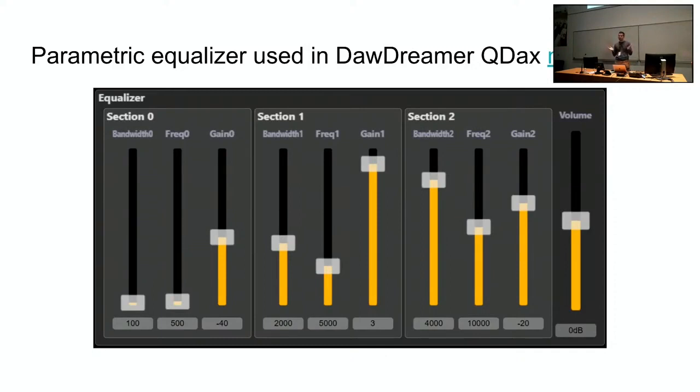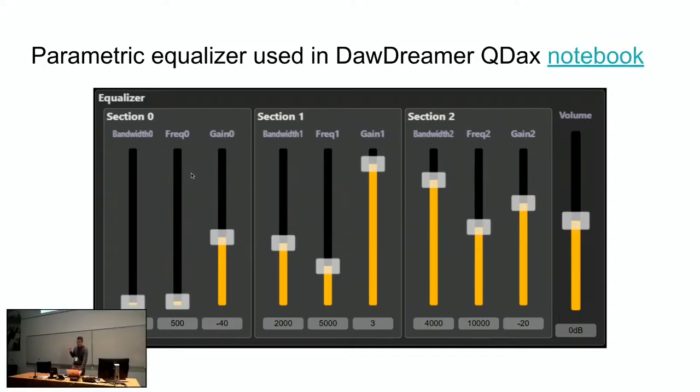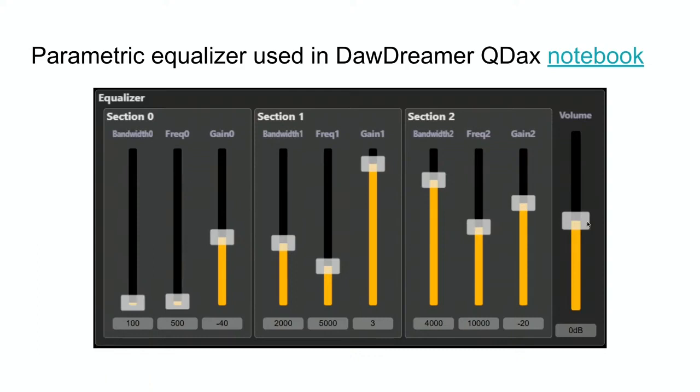So this example was just one parameter that we were optimizing. And of course, DSP is more complicated than that. You might have 10 parameters that you need to optimize or 150 or even 1,000. In this example, which I've linked to, this is another notebook called the QDAX notebook in my Python library called Dawdreamer. And this example is a parametric equalizer. There are three sections with each section having a bandwidth in hertz, a frequency in hertz, and a gain in decibels, and then a final main volume parameter in decibels. And so we may not know anything about the parameters in advance, but it can optimize and find the perfect or near perfect solution and recover those 10 parameters in just a minute. So you can check out that notebook, and I may have time to show it in the afternoon.